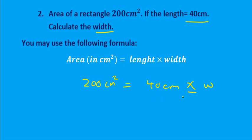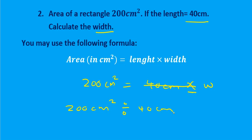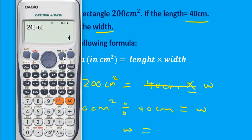We know the inverse operation of multiplication is division, so to cancel and isolate the width, we divide by 40 on the other side. Taking 200 divided by 40 gives us a width of 5 centimeters.